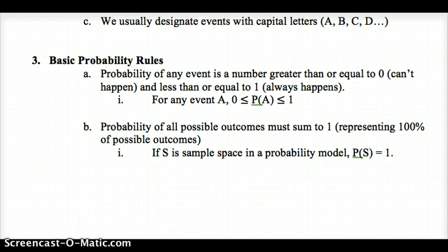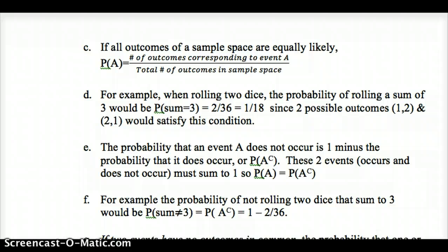The probability of any event is always between 0 and 1. 0 means never happening, 1 means always happening. All the possible outcomes must sum to 1, since you couldn't have more than 100%. If each of the outcomes is equally likely, we can use this fraction: the number of outcomes that corresponds to the event we've defined divided by the total number of outcomes in the sample space. There's two ways to roll a 3, so 2 over 36, or 1 over 18.